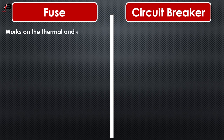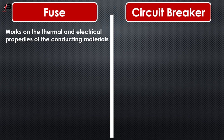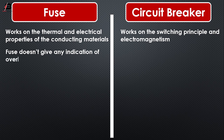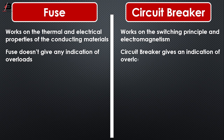A fuse works on the thermal and electrical properties of the conducting material, whereas a circuit breaker works on the switching principle and electromagnetism. A fuse does not give any indication of overloads, whereas a circuit breaker gives an indication of overloads.